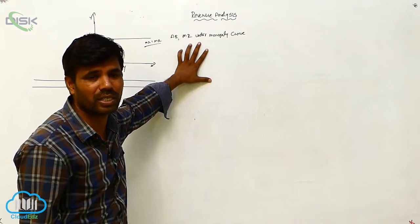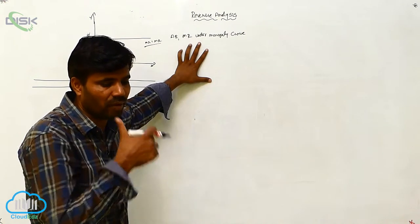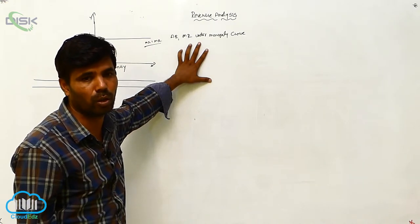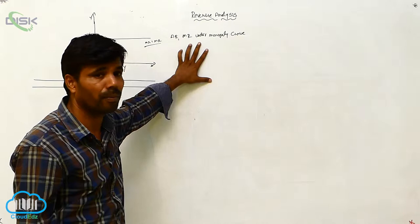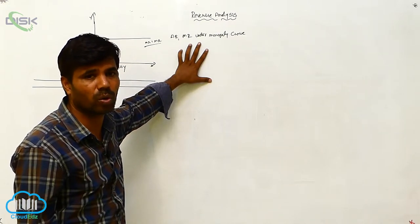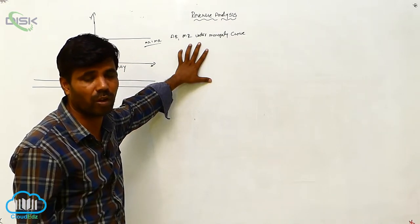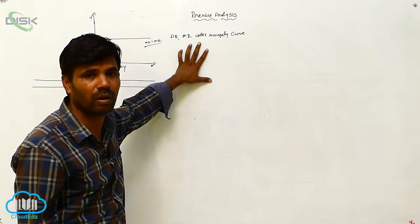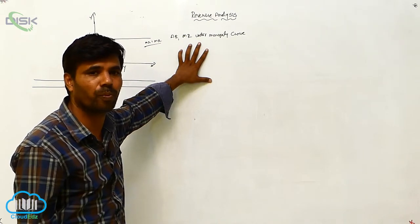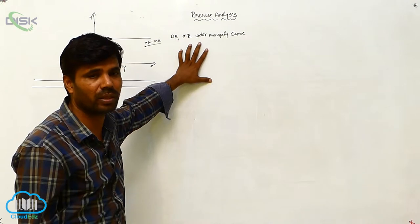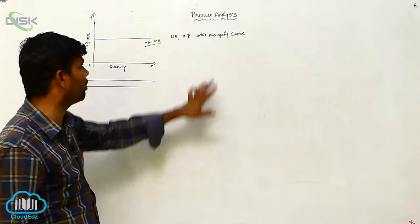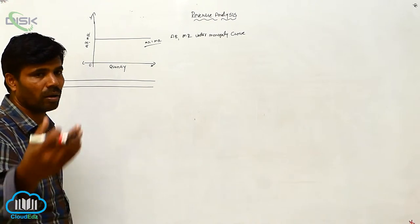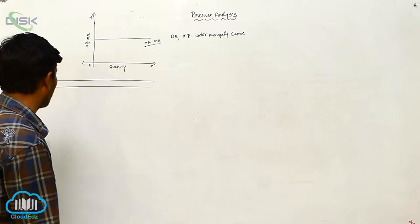When quantity is less, price will be high; when quantity is high, price will be low. So what is the curve — it will be left to right sloping downward, or right to left sloping upward. We can show this in one diagram.